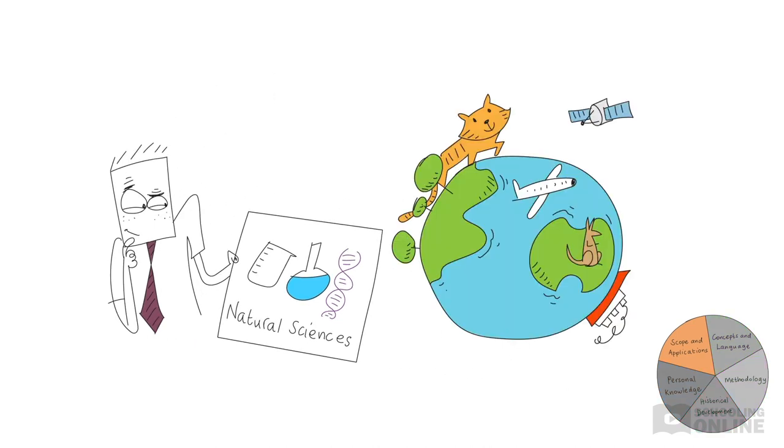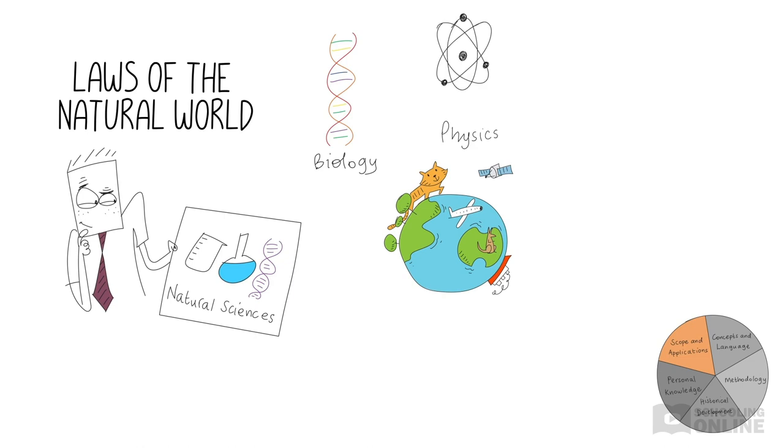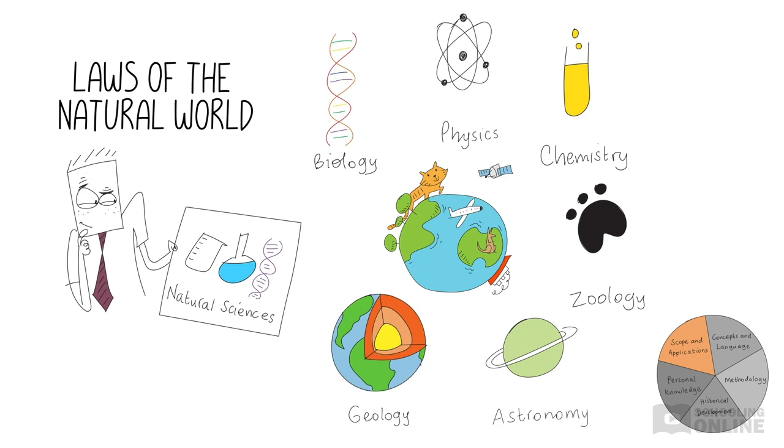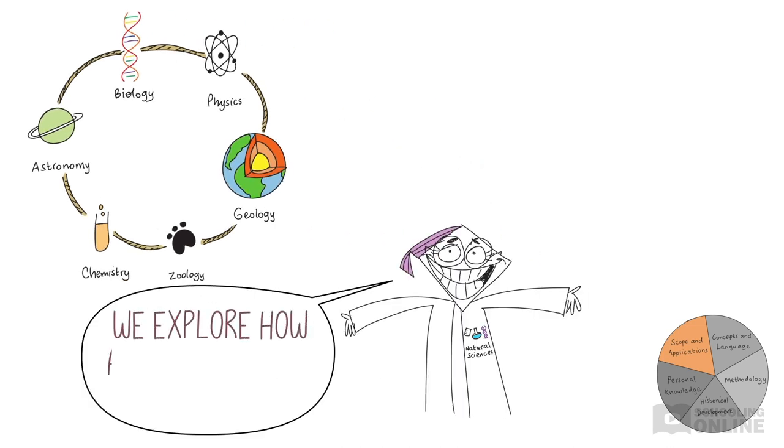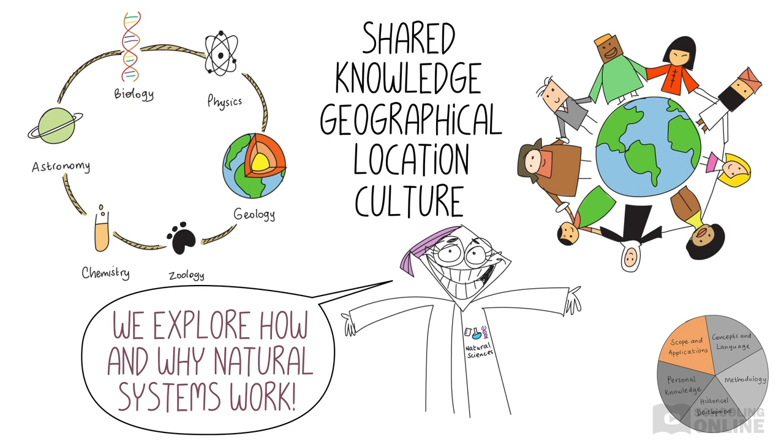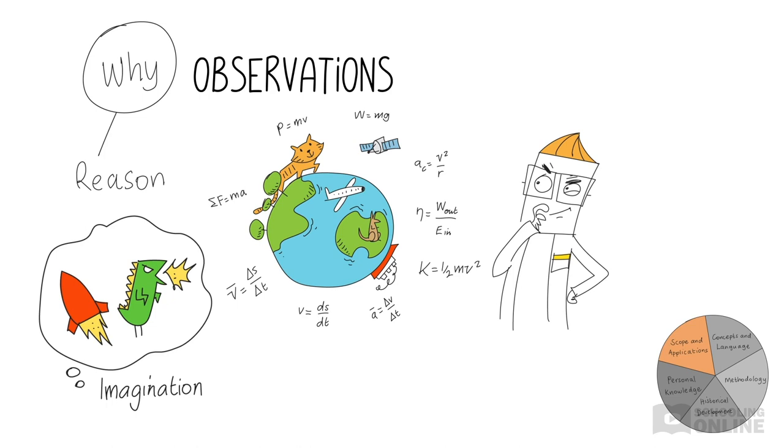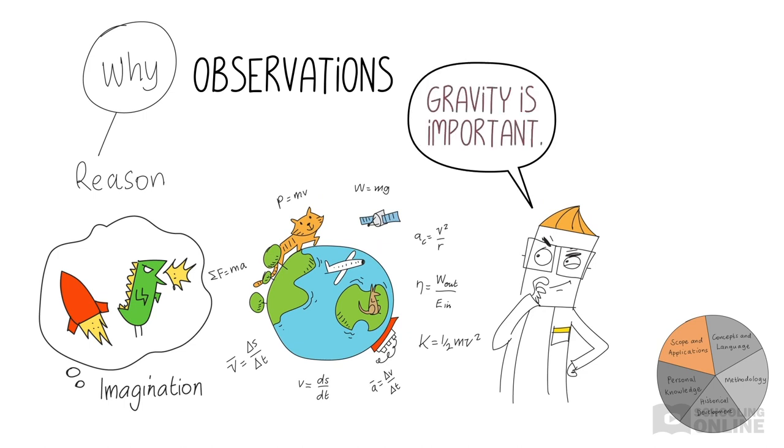The scope and applications of the natural sciences are all about figuring out the laws of the natural world, which includes all the physical and living things around us. The natural world is huge, so the natural sciences include a broad range of subjects: biology, physics, chemistry, zoology, astronomy, geology, and much more. What unites these diverse disciplines? The natural sciences explore how and why natural systems work across multiple levels. Often, this shared knowledge is independent of geographical location and culture. Scientists prioritize making observations about the world and explaining these observations through reason and also imagination. Using these observations and explanations, scientists can make generalized statements about how the world works.